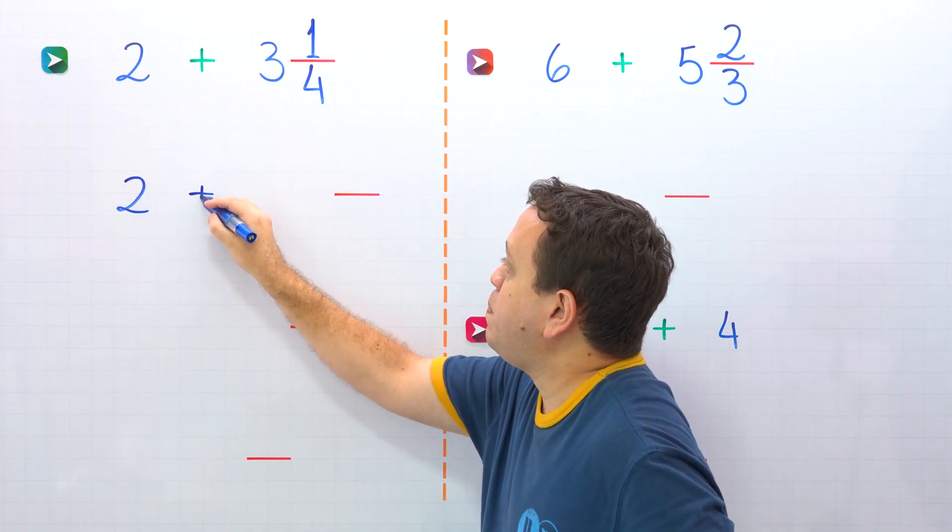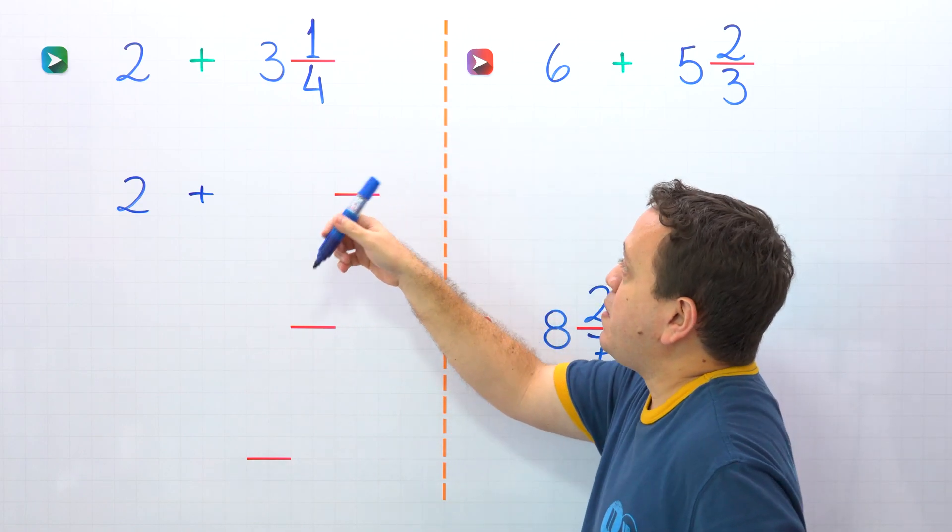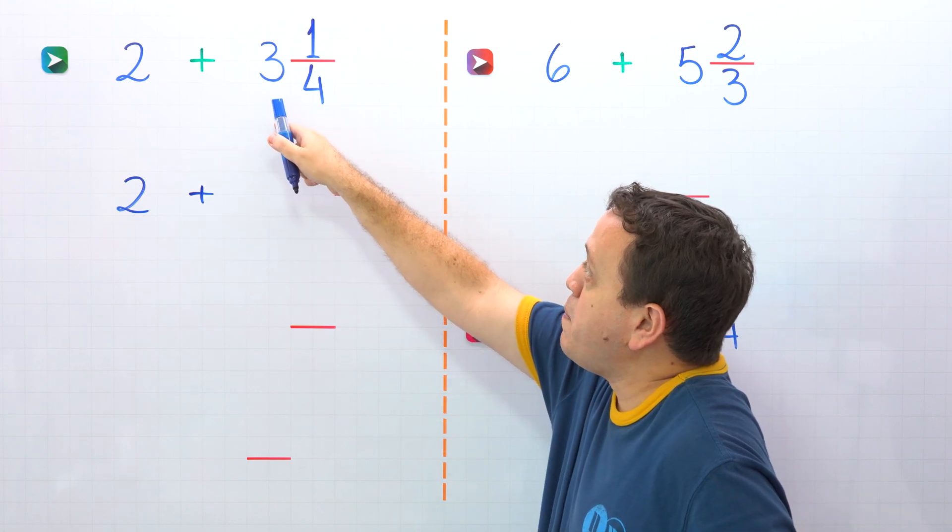Now, pay attention! Once again, we need to remember the definition of a mixed number. A mixed number is the sum of a whole number and a proper fraction.